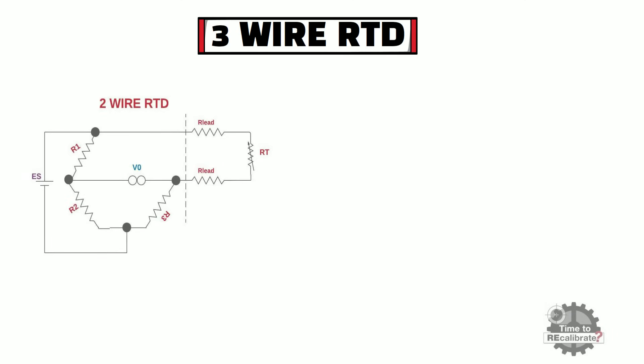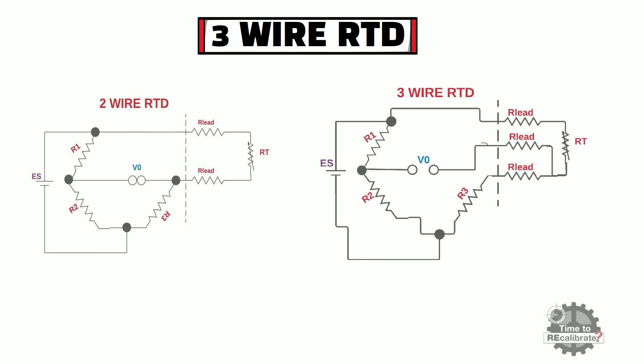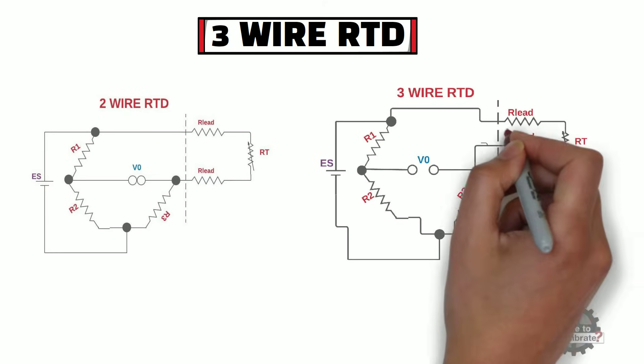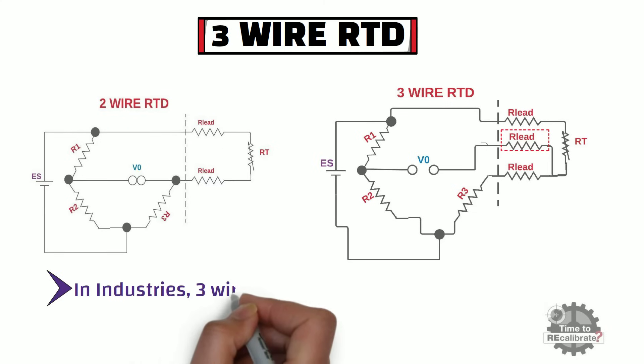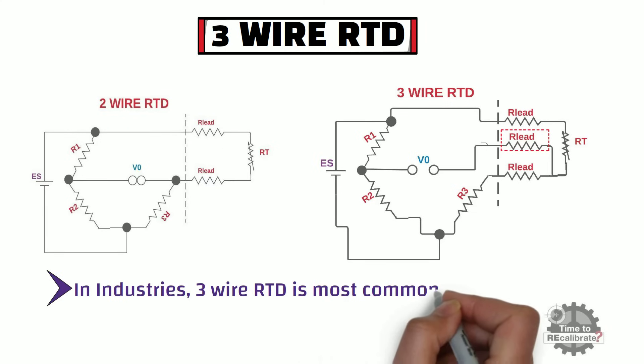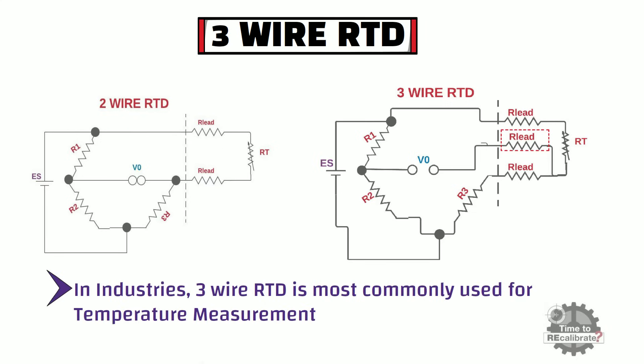As you can see from the pictures, the major difference between 2-wire RTD and 3-wire RTD is that the 3-wire RTD has an extra lead wire. This extra lead wire eliminates the effect of lead resistance in the circuit, which is not possible in 2-wire RTD. Hence, this is the reason that 3-wire RTD is the most commonly used RTD in industries.